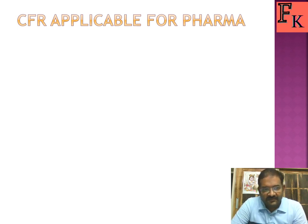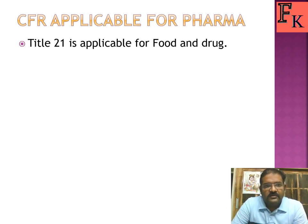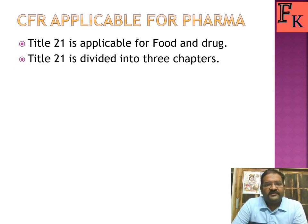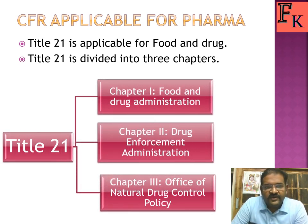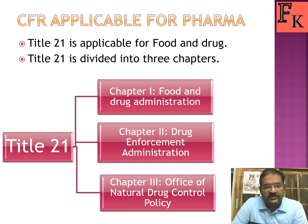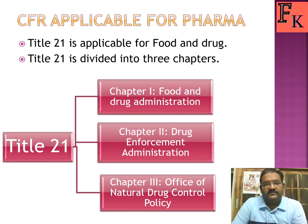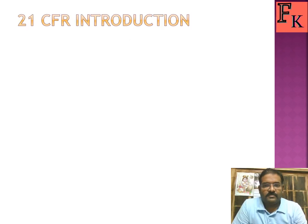Now let's see which CFR title is applicable for pharma. Title 21 is applicable for Food and Drugs. Title 21 is divided into three chapters: Chapter 1 is the Food and Drug Administration, Chapter 2 is the Drug Enforcement Administration, and Chapter 3 is the Office of National Drug Control Policy. For pharma industry purposes, we mainly deal with Chapter 1, the Food and Drug Administration.